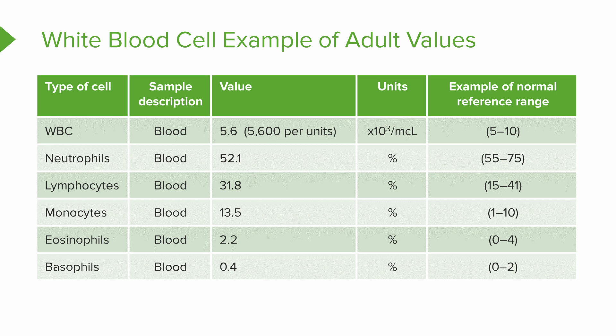Adding up all five types — 52.1, 31.8, 13.5, 2.2, and 0.4 — gives a total of 100%. So the overall WBC count is 5.6 units per microliter, and then the five different types of white cells tell you the percentage that makes up that total. When these percentages are off, it gives us even more specific information about what's going on with your patient.